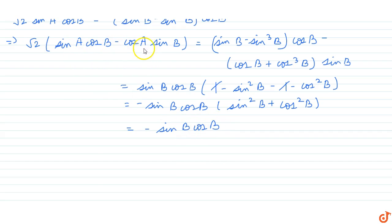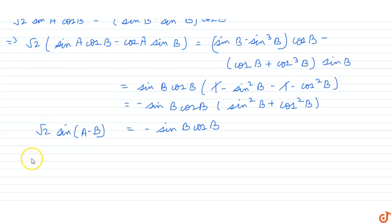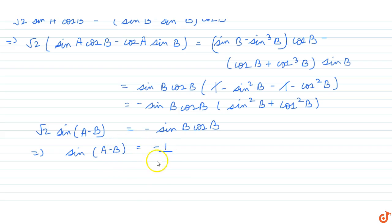Now sin a·cos b − cos a·sin b is the formula for sin(a − b), and we have √2 on the left side. So this implies sin(a − b) = −(1/√2)·sin b·cos b.